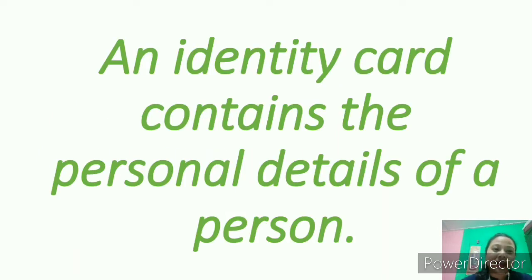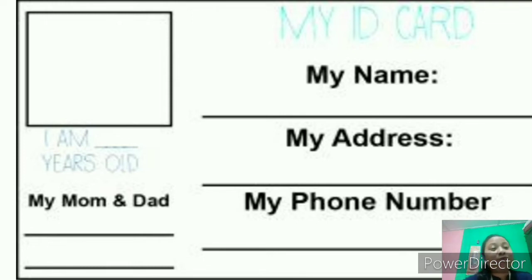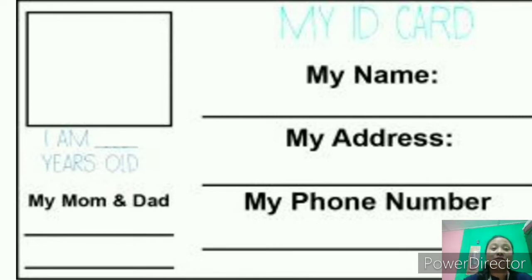An identity card contains the personal details of a person. This is generally an ID card provided to students from the school, which mostly contains the name, address, phone number, and of course the photographs. These identity cards are given to students or to people from a concerned authority.